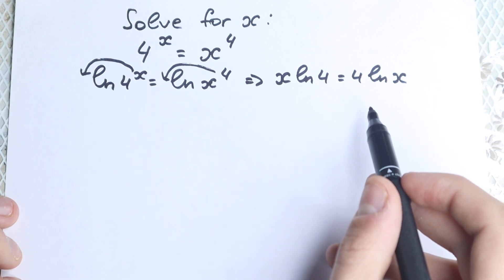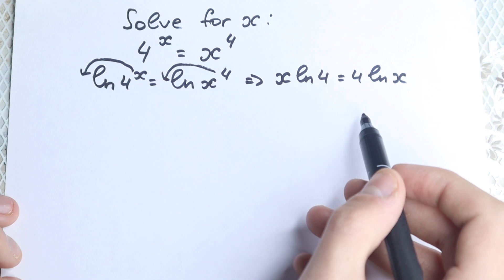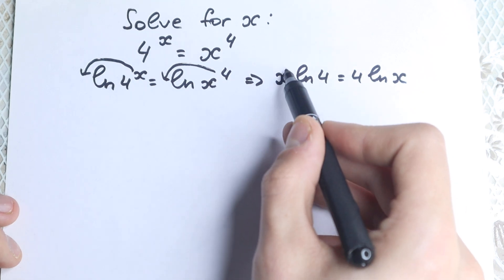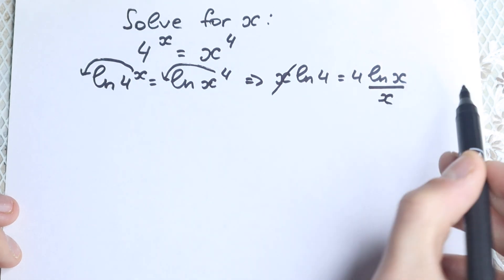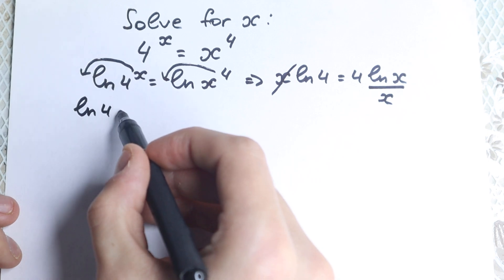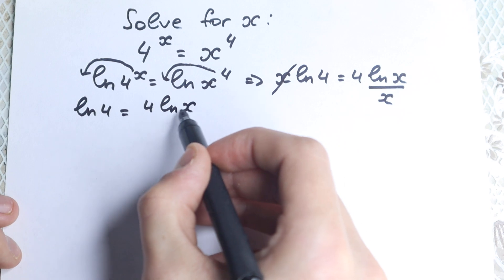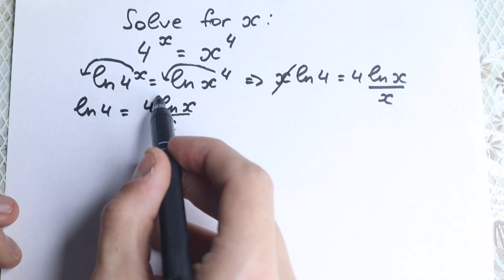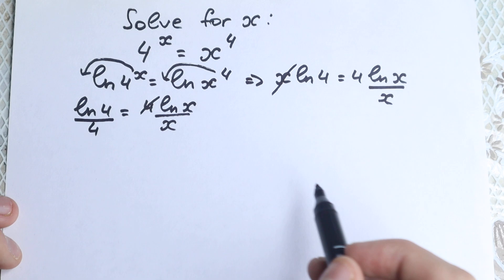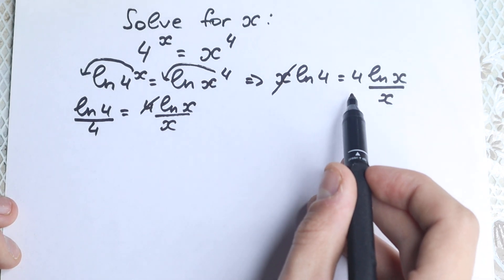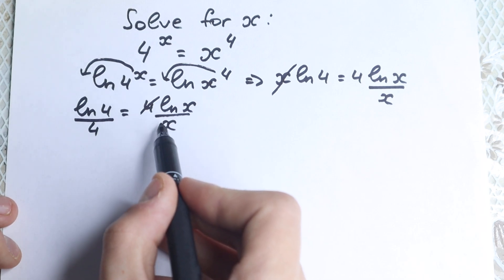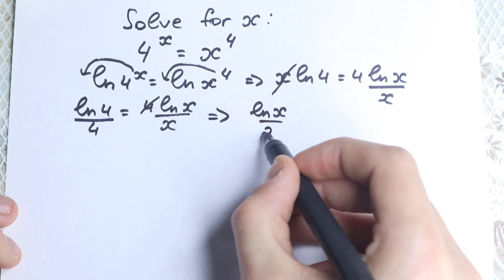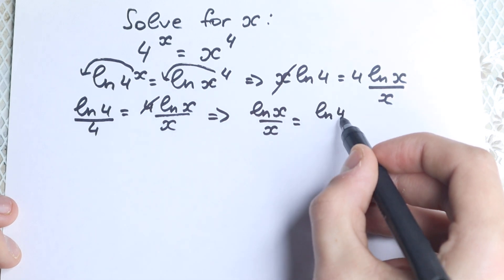Let's regroup our elements — constants on one side, variables on the other. We divide both sides by x, which cancels x on the left and places it under the right, giving natural log 4 equal to 4·ln(x)/x. Then divide both sides by 4 to get natural log(x)/x equal to natural log(4)/4.